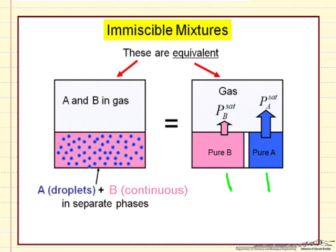It's the same if they're stirred and there's droplets of one in the other, but they don't mix, which means they each exert their own vapor pressure. If both are present, their vapor pressures are exerted independent of the other species.